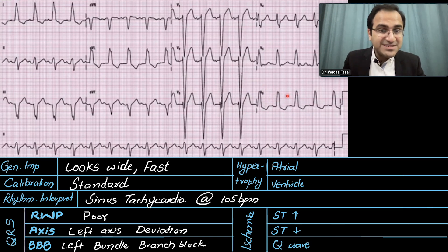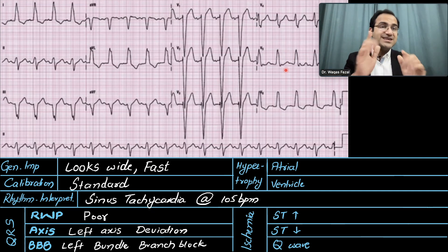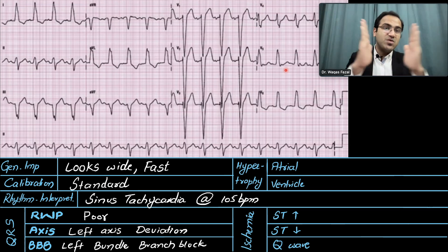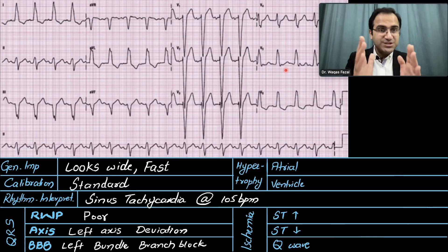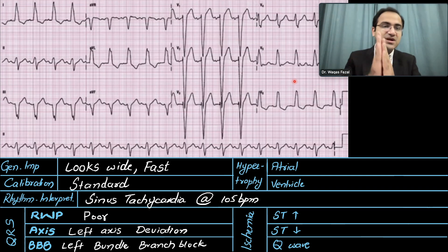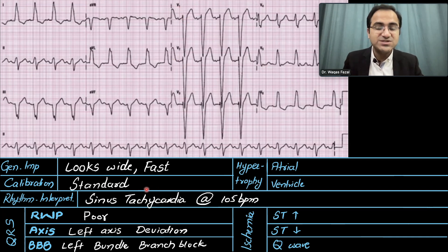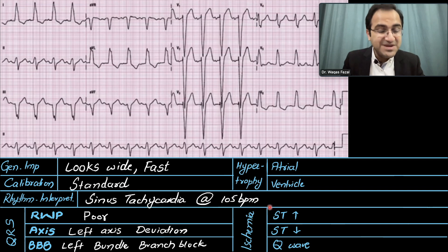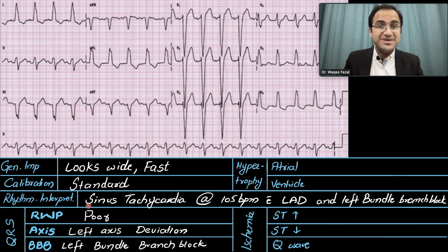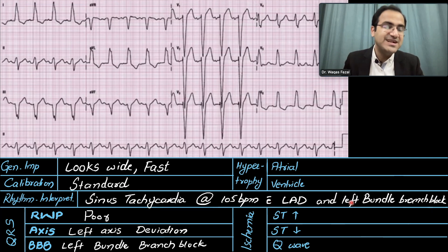Looking at the bundle branches: there is a notch — an M wave in V5 and V6, although not very prominent due to image quality. The presence of even a small notch indicates a combination of two QRS complexes. In V1 and V2 you can see the deep S wave, confirming left bundle branch block. The final rhythm interpretation: sinus tachycardia at 105 to 125 beats per minute with left axis deviation and left bundle branch block.